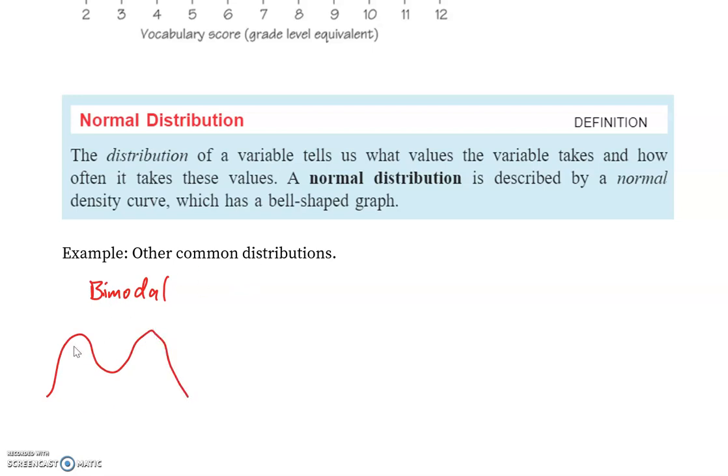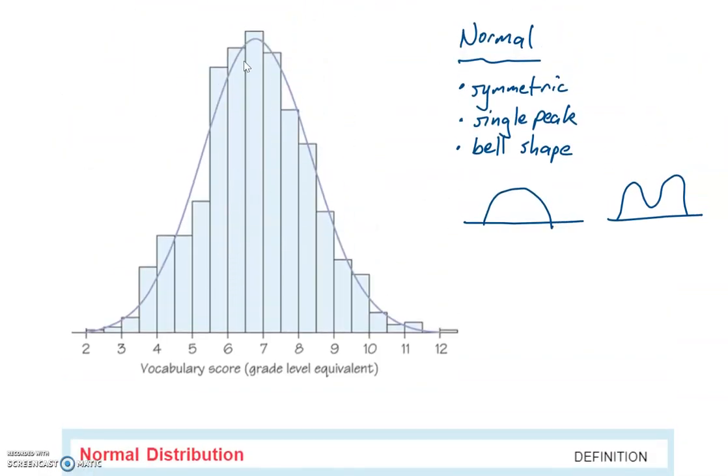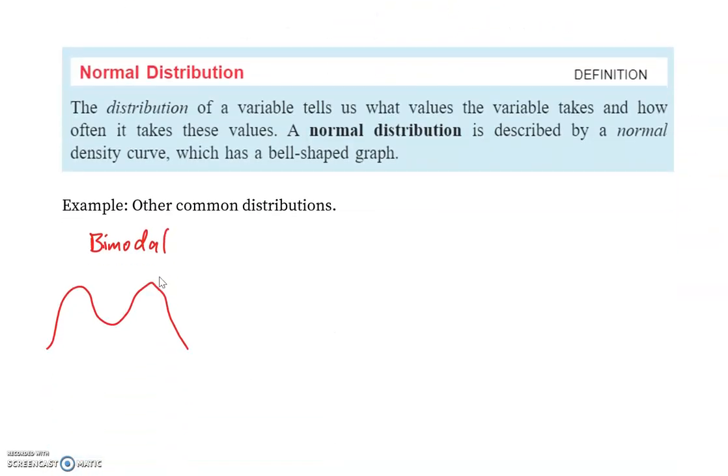It's not necessarily that that data point is itself the most common, because typically these curves are based off of histograms, off of discrete data. So it could be that there are a couple data points in that general area that are happening most commonly. So we could have bimodal.